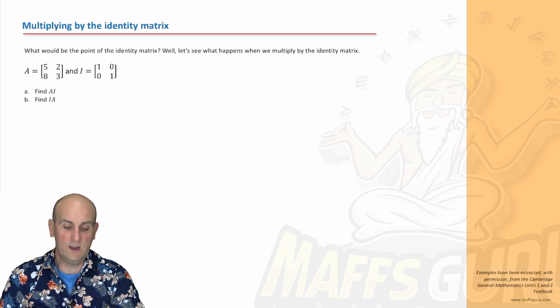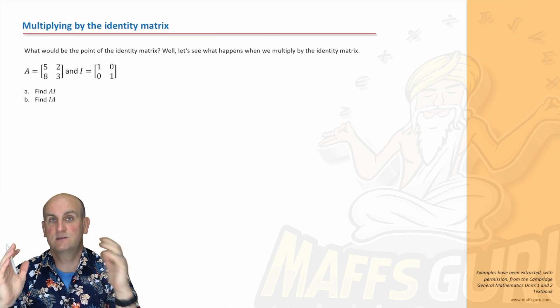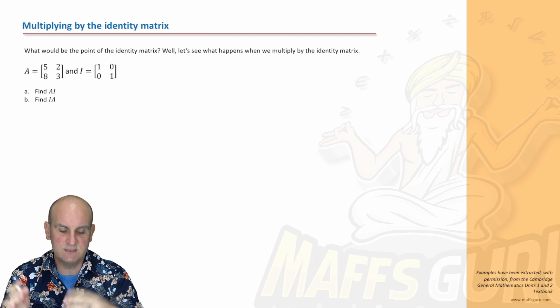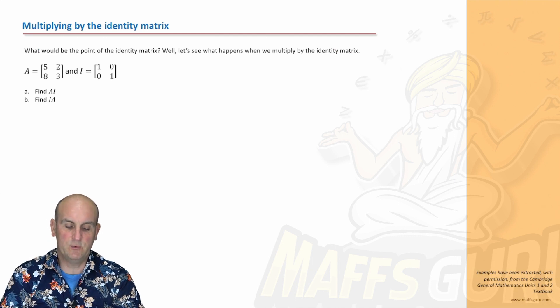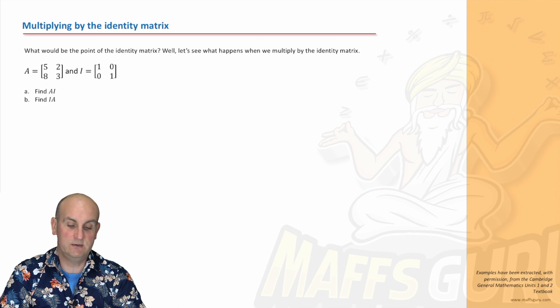So that's an identity matrix. But what is it used for? Well, I suppose let's have a look at some multiplication. Because if it's square and we've got square matrices, we can multiply them together. Here's an example.